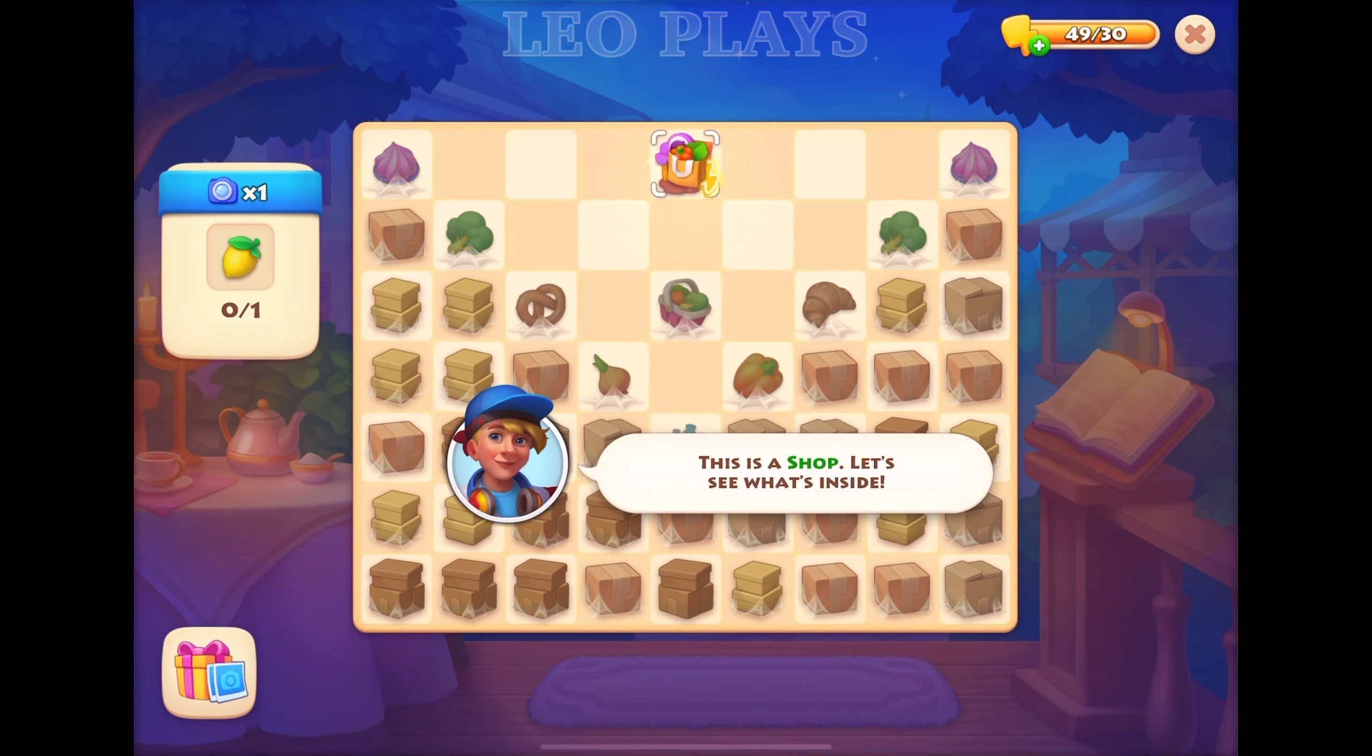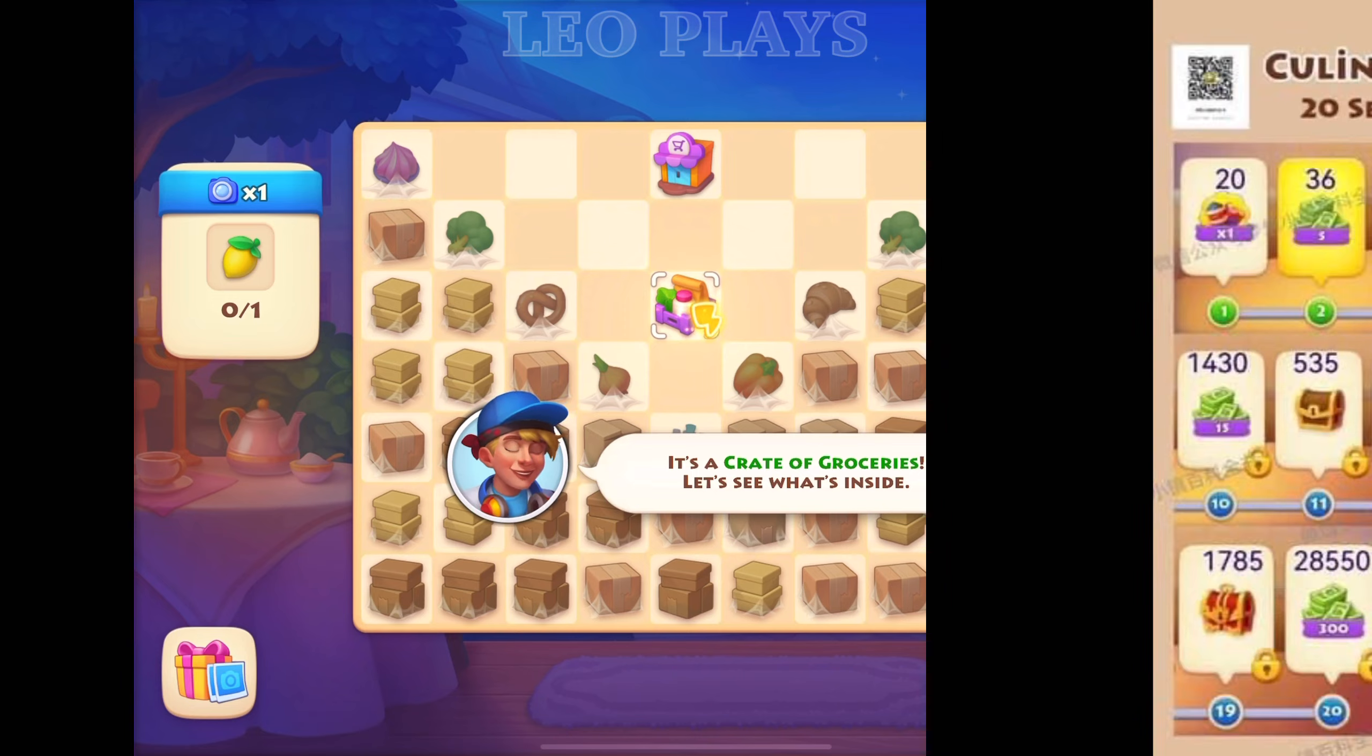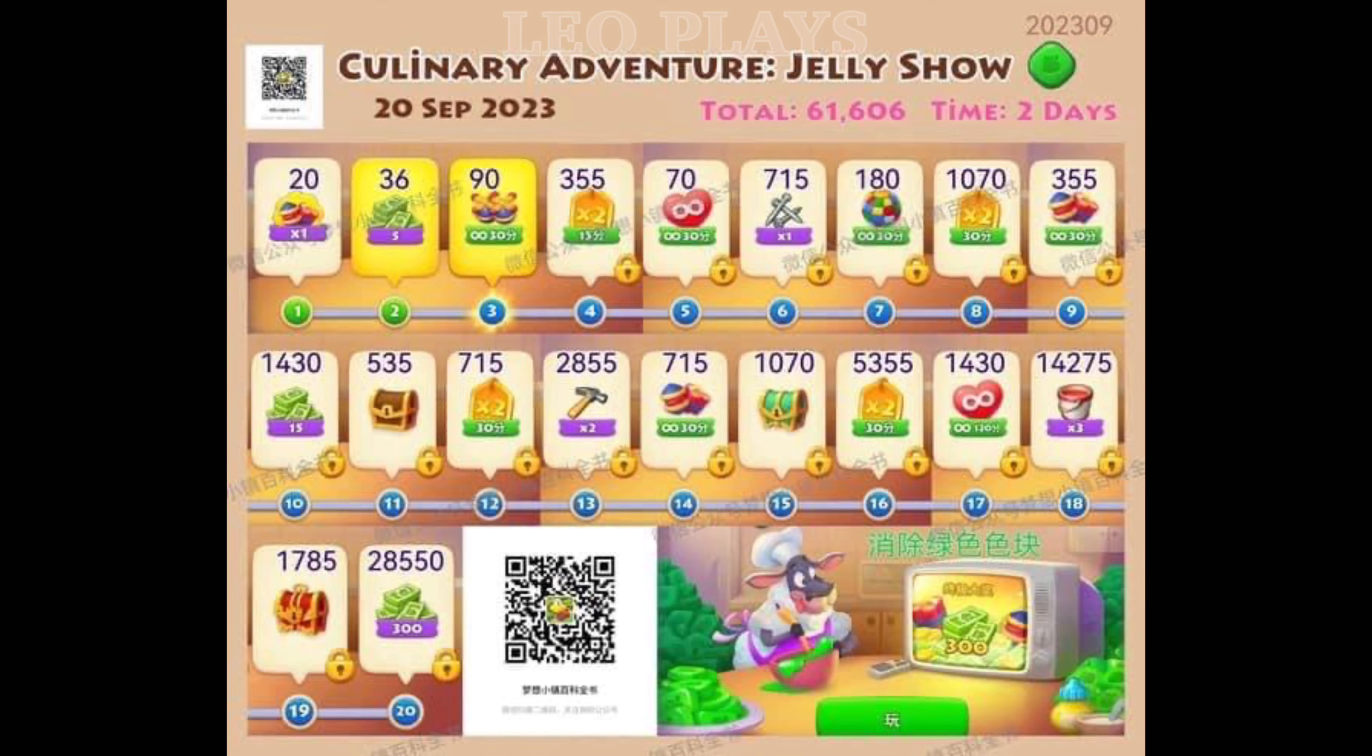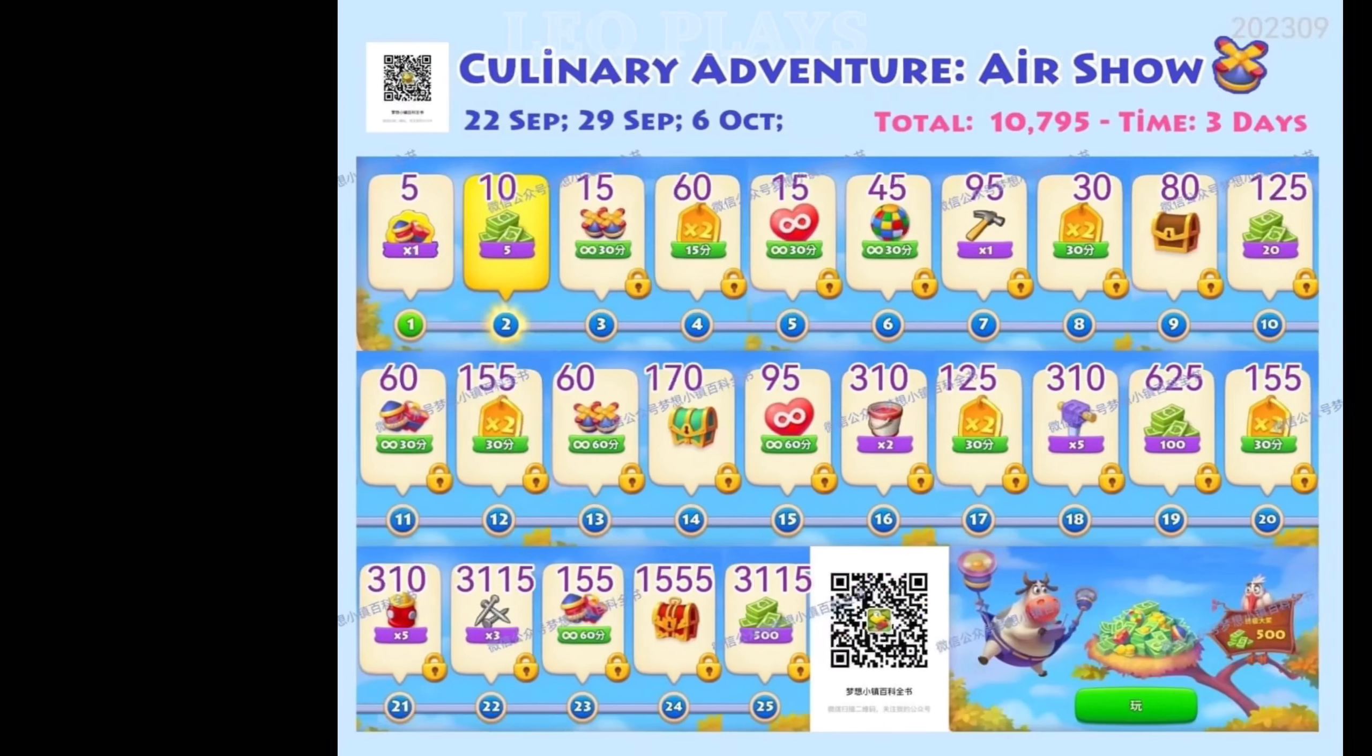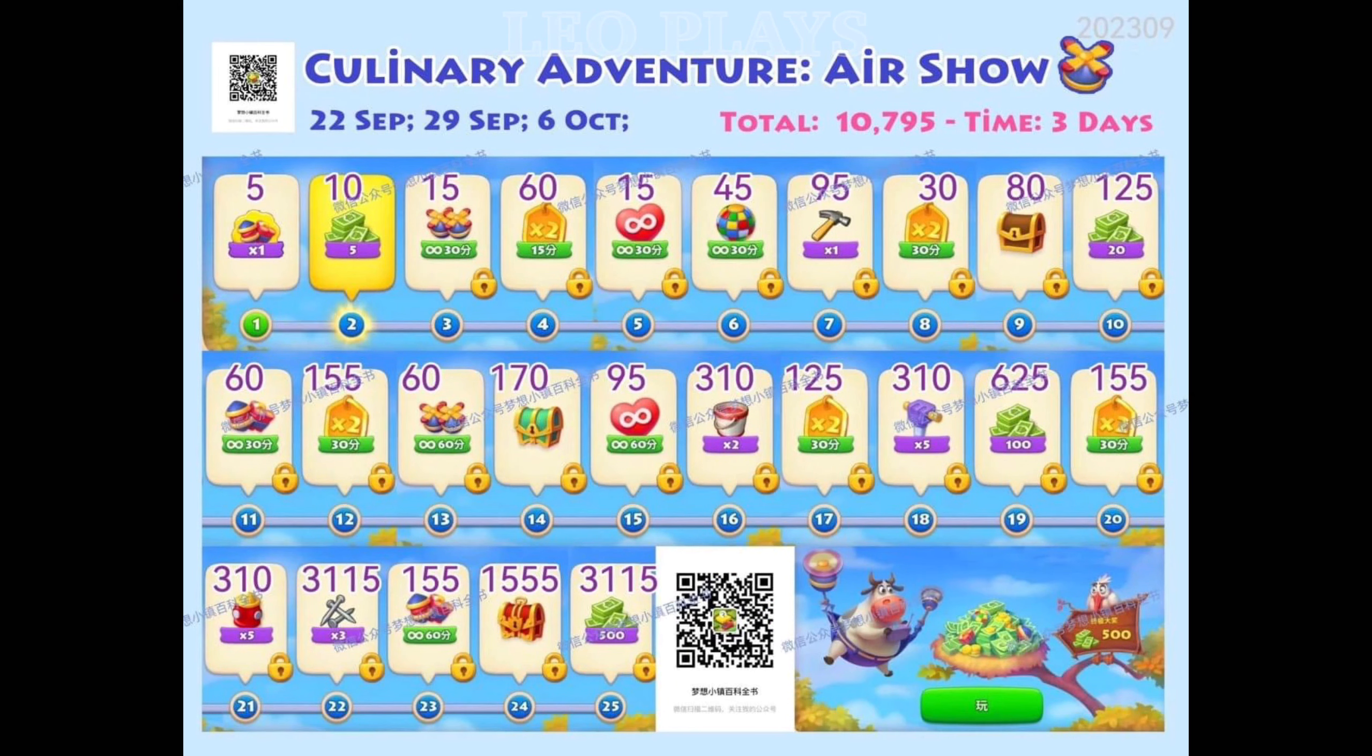The culinary adventure has begun. Here are some useful guides to help you play the game. For starters, here are the reward lists for Jelly Show. There are two jelly shows. This one lasts for two days and requires 60,000 plus points. The second jelly show lasts four days and requires 85,000 plus points. There's only one air show and this lasts three days for 10,000 plus points.